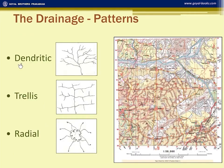In the dendritic pattern, the river and its tributaries make a pattern like the veins of a leaf, or we can say like a branch of a tree. You can see the example in grid square 3894.